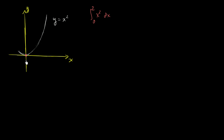Let's look at our endpoints. This is x is equal to 0, and this right over here is x is equal to 2. What we're doing is for each x, we're finding a little dx around it. We're multiplying that dx times our function, times x squared — this width times this height. The height right over here is x squared, and we're getting the area of this little rectangle. The integral sign is literally the sum of all of these rectangles for all of the x's between x equals 0 and x equals 2.